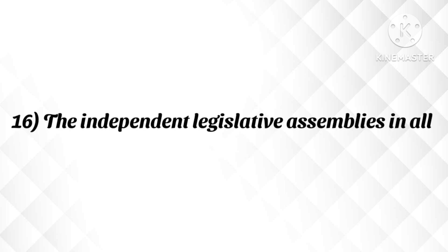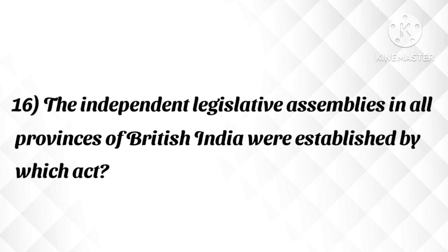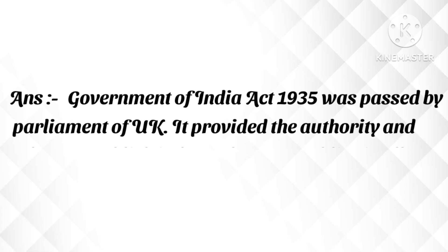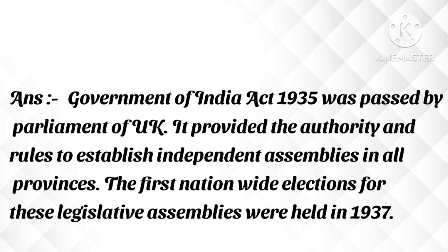The independent legislative assemblies in all provinces of British India were established by which act? Answer: The Government of India Act 1935 was passed by the Parliament of the UK. It provided the authority and rules to establish independent assemblies in all provinces. The first nationwide elections for these legislative assemblies were held in 1937.